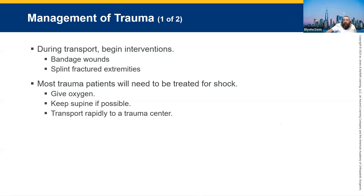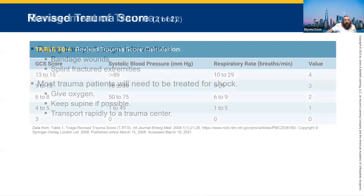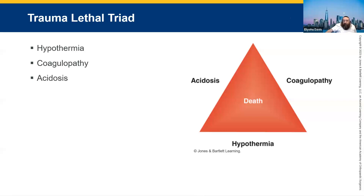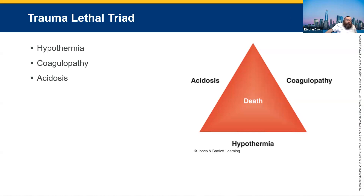Management of trauma — you've got to worry about spinal stuff and fluids. This is called the lethal triad — it's not usually taught to EMTs. One thing really important for EMTs to know is hypothermia. Even if they're mildly hypothermic, they have a lower survival rate than normothermic patients.